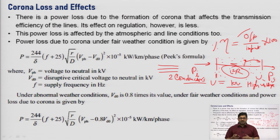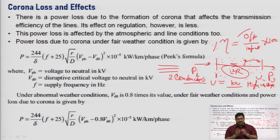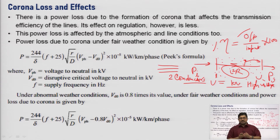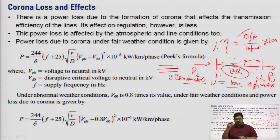Power loss is also affected by atmospheric and line conditions. From previous topics we saw that corona effect is due to high voltage — specifically the critical disruptive voltage. The critical disruptive voltage depends on the environmental situation and the conductor surface condition, which we discussed last time under irregularity factors.